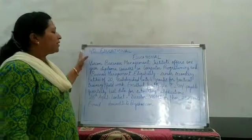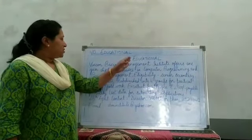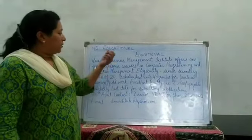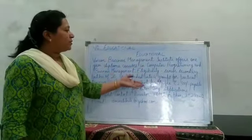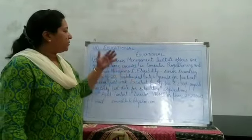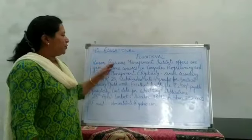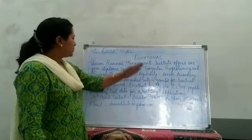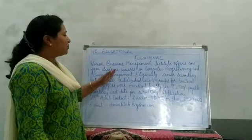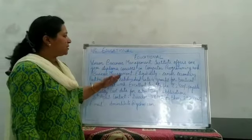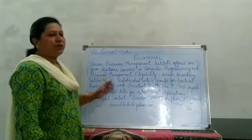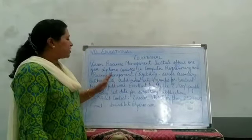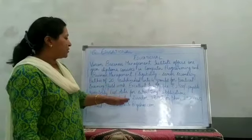The last type of classified advertisement is Educational. Some schools or coaching institutes put up advertisements reflecting the courses they offer, along with fee structure and eligibility requirements. Example heading: 'Vision Business Management Institute offers one-year diploma courses in Computer Programming and Business Management.' Eligibility: Senior Secondary. Batches of 20 students, subdivided into four groups for practical training or project work. The batch of 20 is further divided into four groups. Excellent faculty.